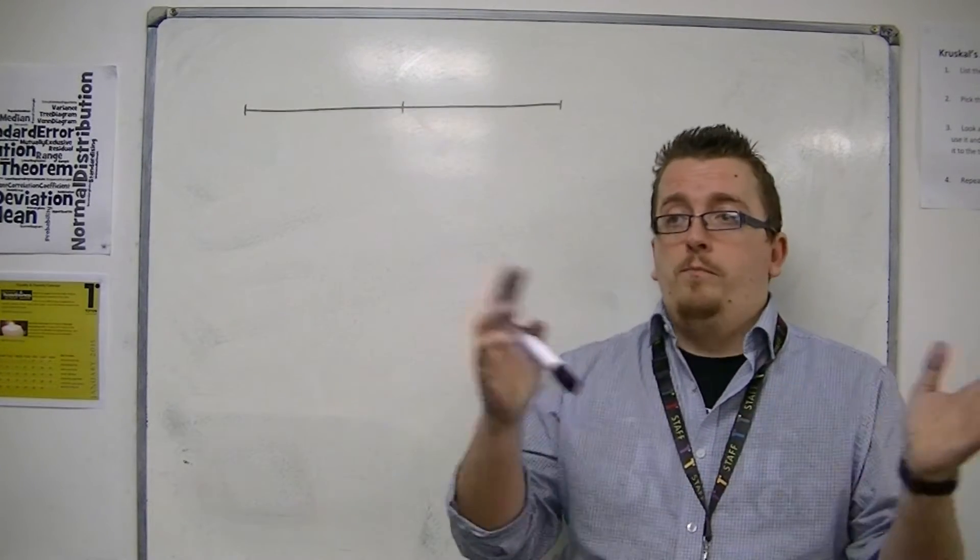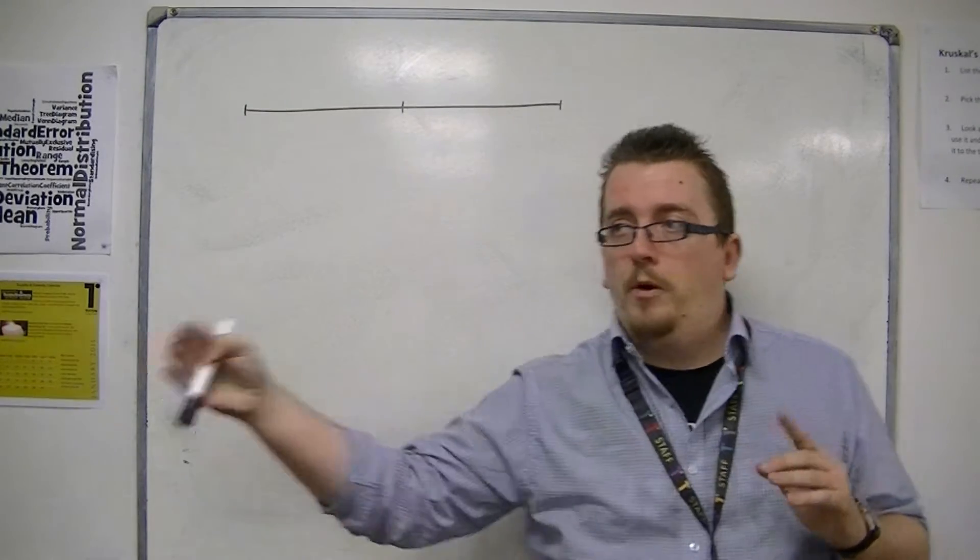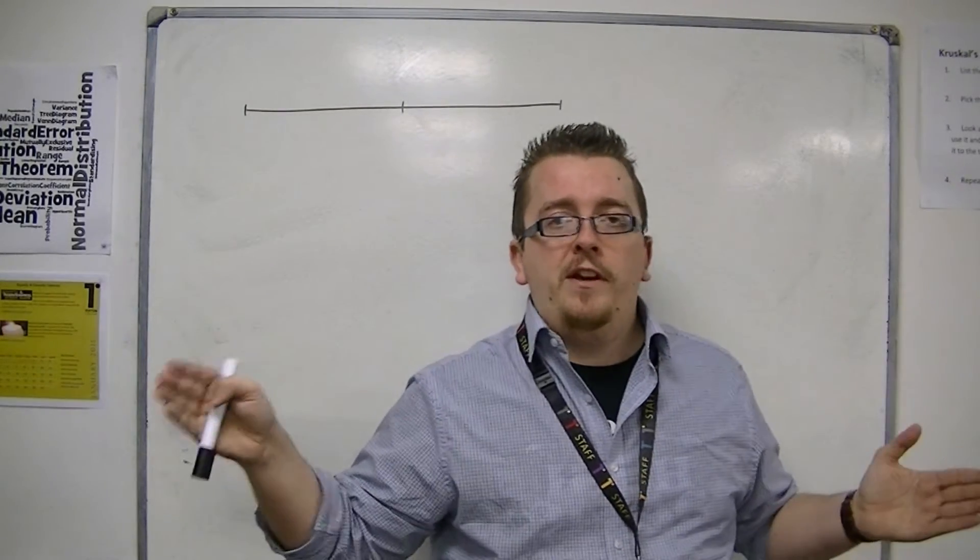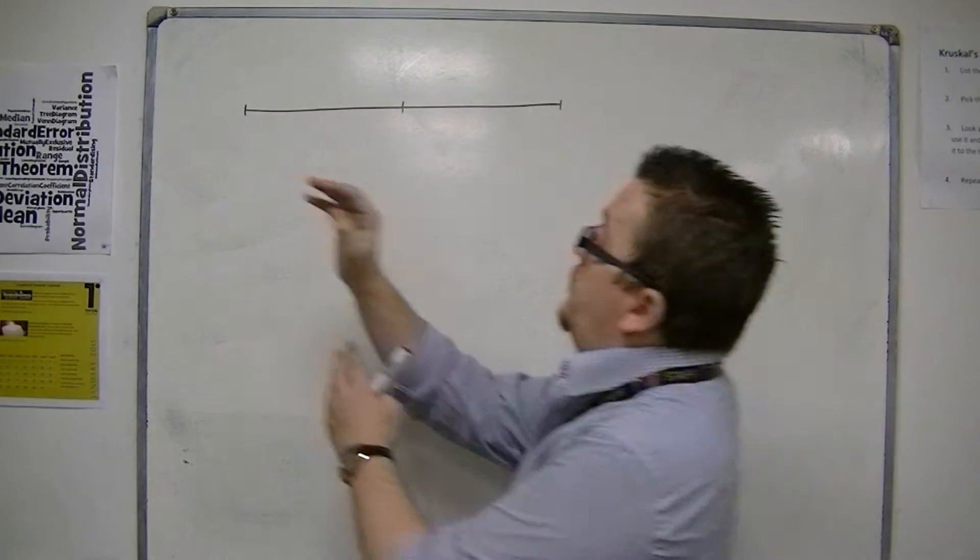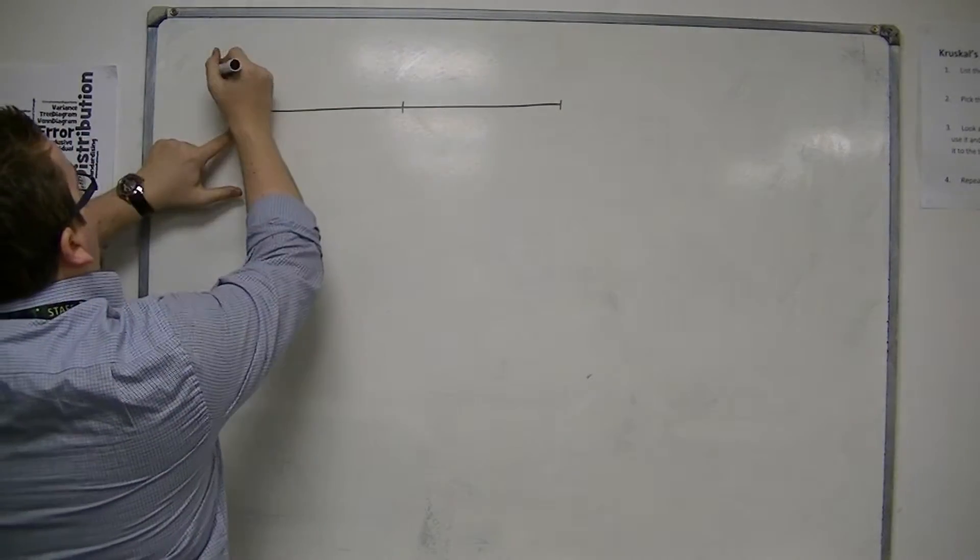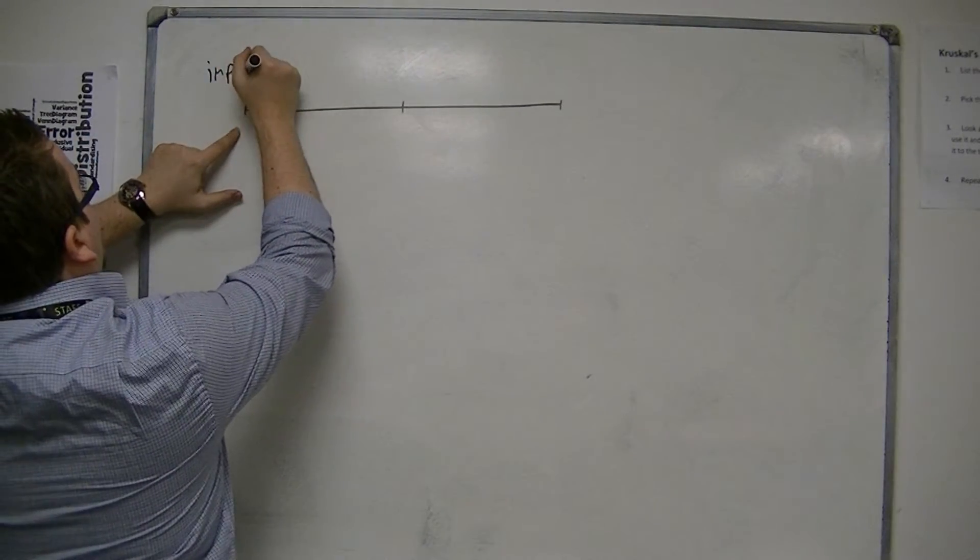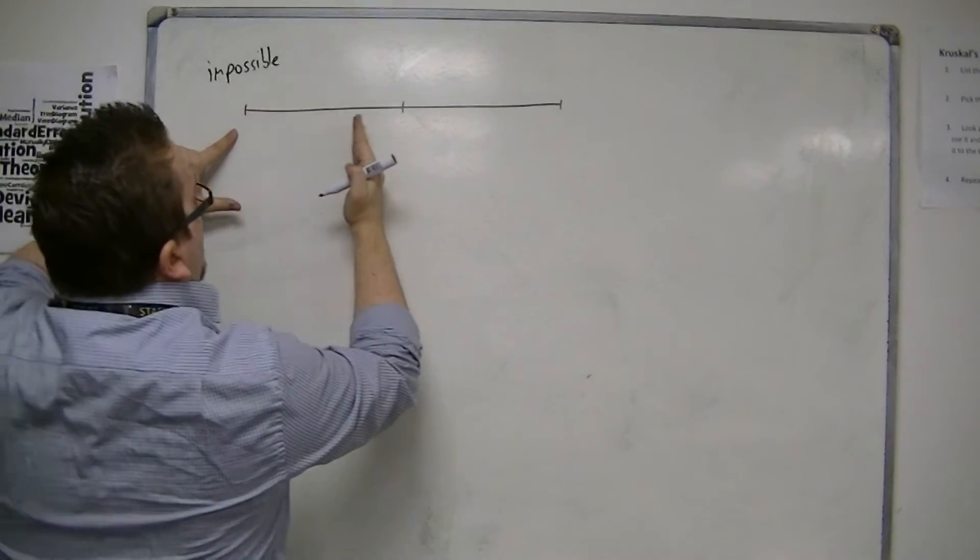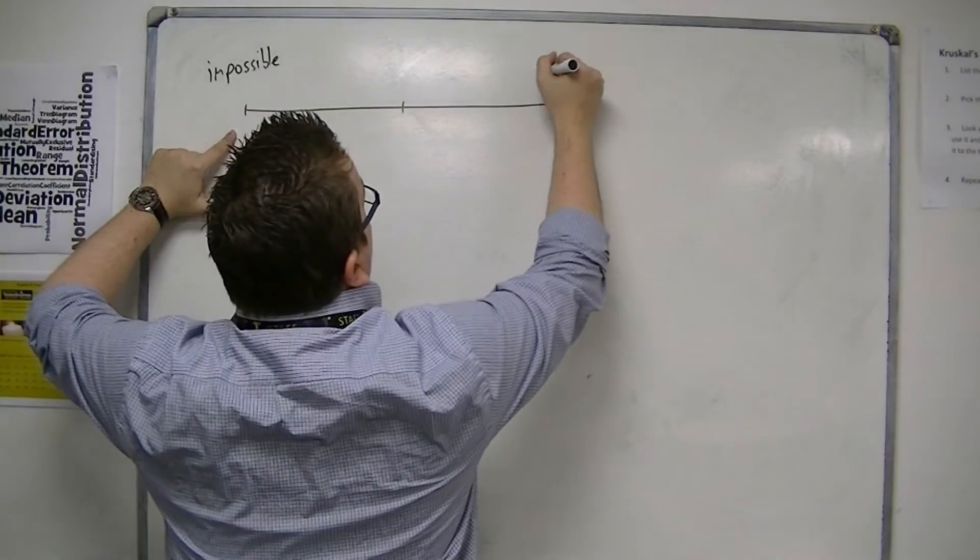And these words, if you put them on a line from being impossible up to certain, would start to look like, well, we could put impossible right on the left hand side, and then we'd go all the way up to certain.